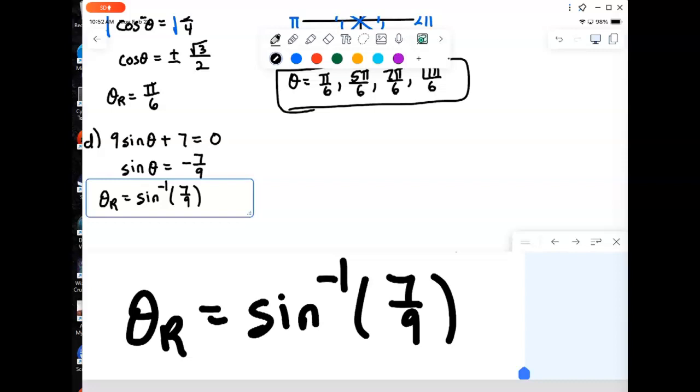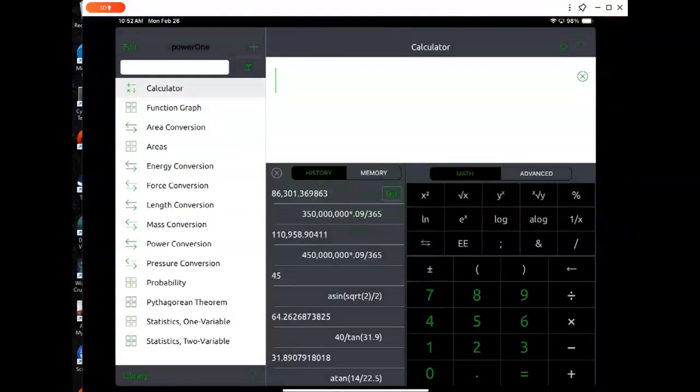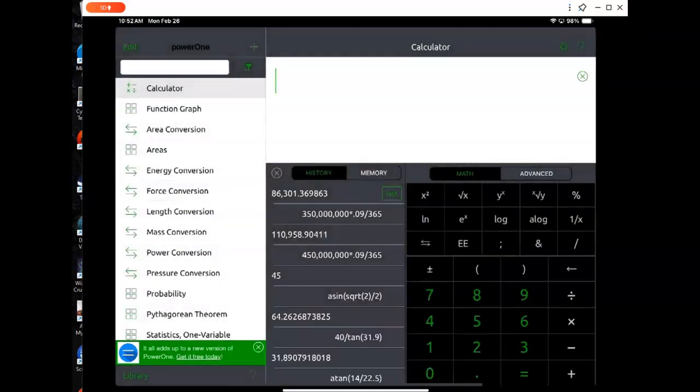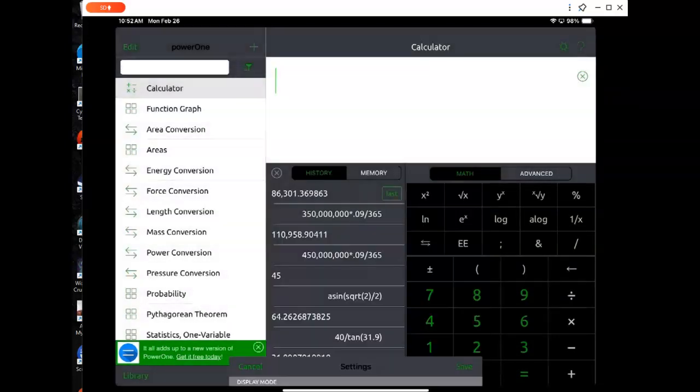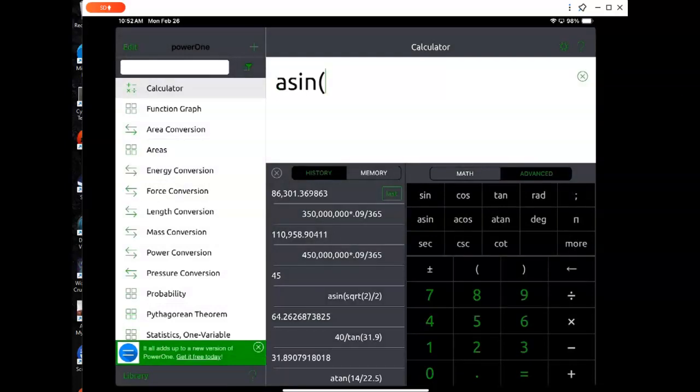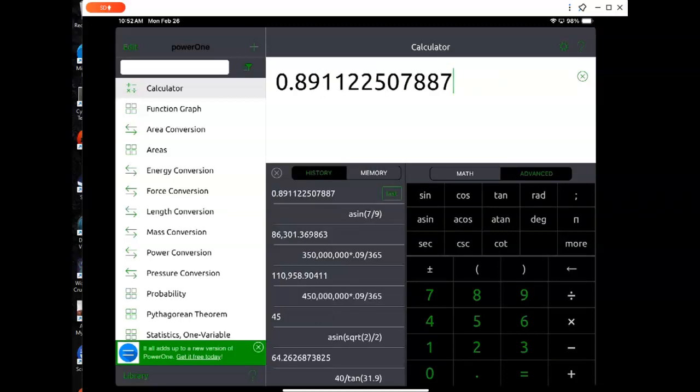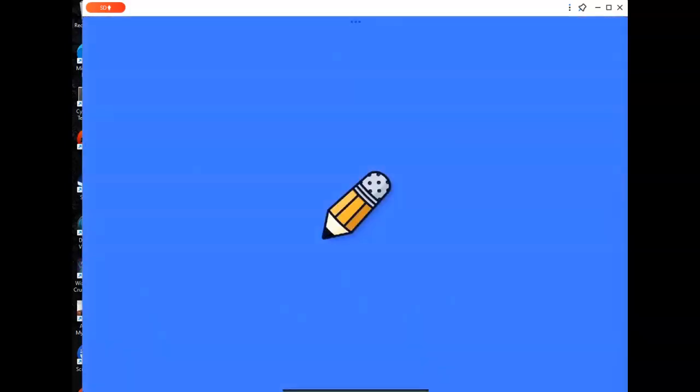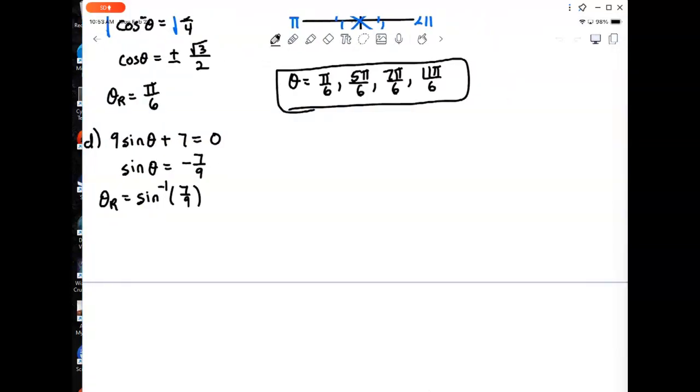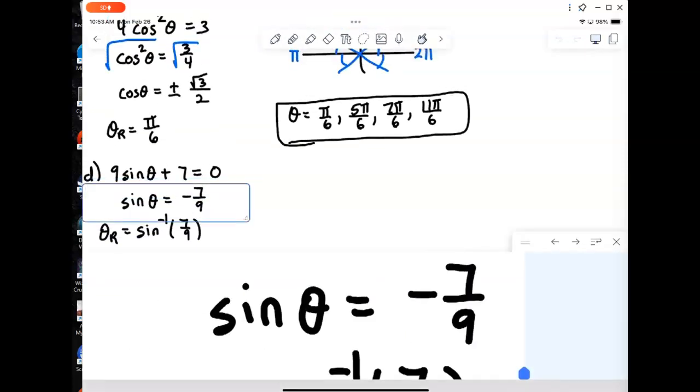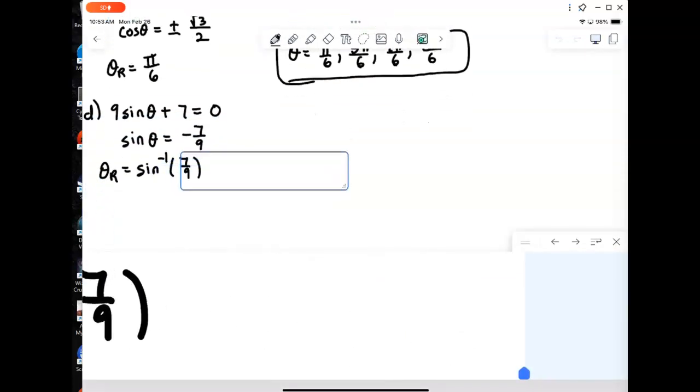And now, because this is not an exact value, we are actually going to use our technology to compute that. So I do need to make sure that I am in radian mode. And I just come in here and use my inverse sine. My calculator says A sine. Inverse sine of 7 ninths. So we'll find out the decimal version of my reference angle is 0.891. So we'll come out here, 0.891.